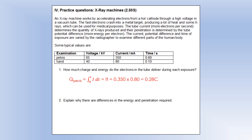I'm going to use the fact that the charge is the integral of current with respect to time. You're probably more familiar with Q equals IT, but that equation assumes the current is constant. The more general form is the integral of I. We know the current, converted into amps, and we know the time, and that gives us our charge. We can repeat that process for the hand.